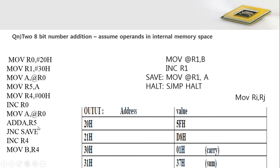We must note that the destination operand must always be the accumulator in case of addition, subtraction, and other arithmetic operations. So A is placed in the destination position and the other operand R5 is placed in the source position. After addition, A plus R5 is performed and the result is placed back into the accumulator.